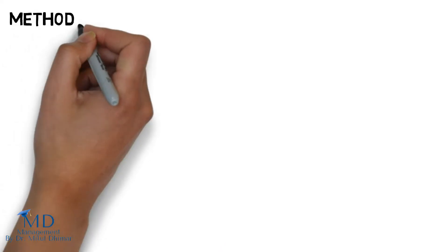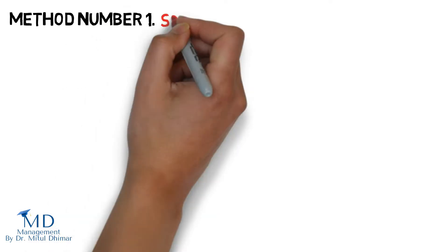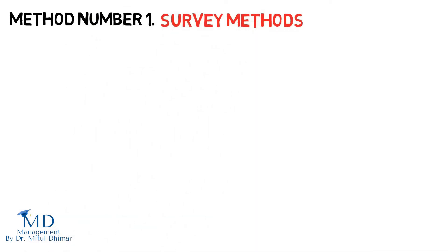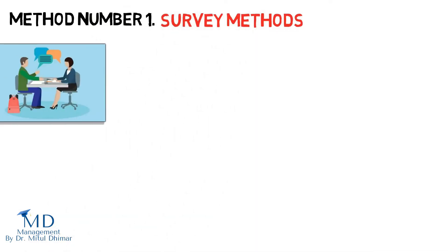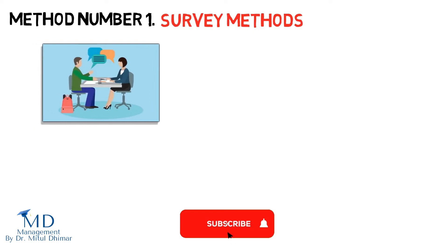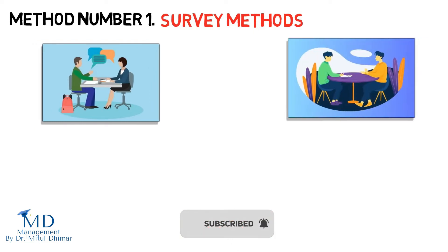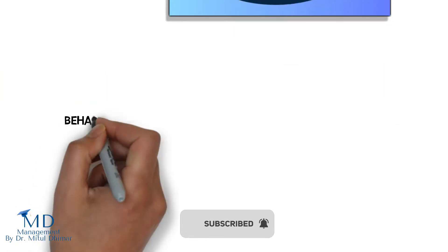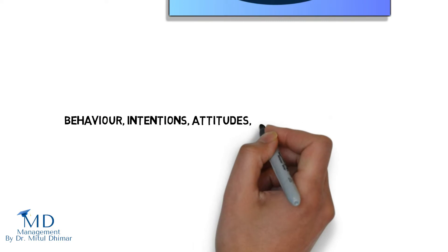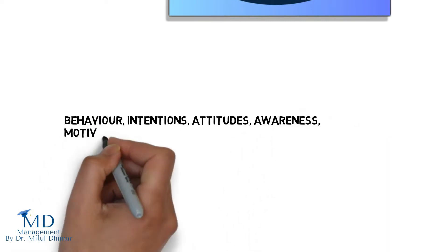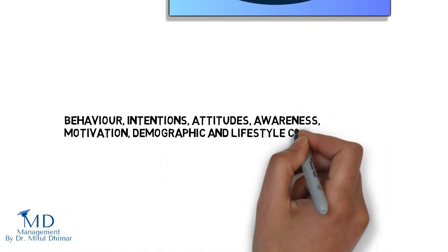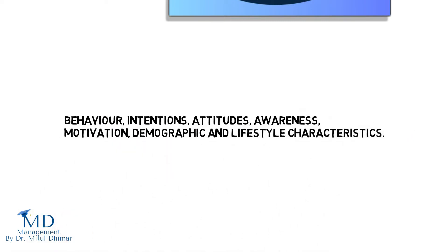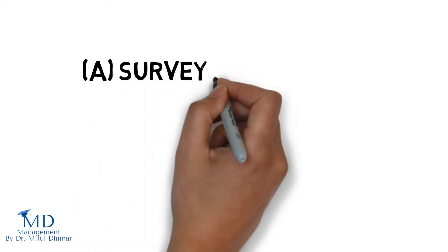Now let us start with method number one: survey methods. The survey method of obtaining information is based on questioning of respondents. Respondents are asked a variety of questions regarding their behavior, intentions, attitudes, awareness, motivation, and demographic and lifestyle characteristics.